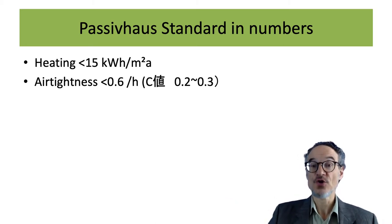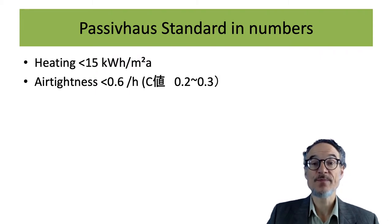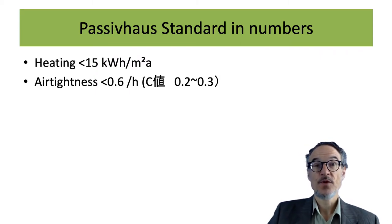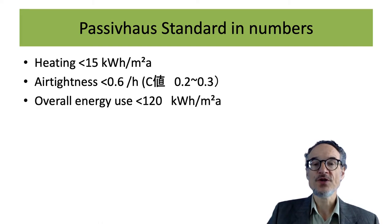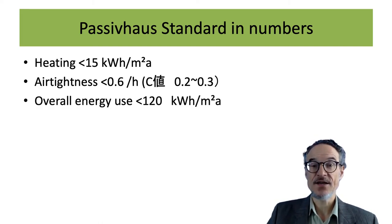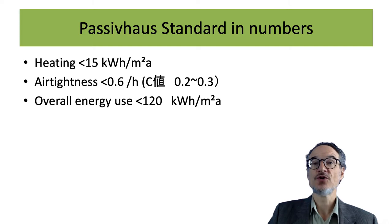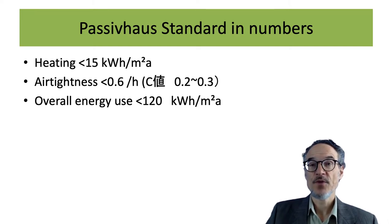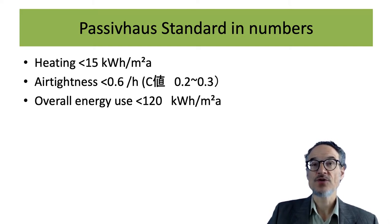When you're airtight, your ventilation works better. The overall total energy use — including heating, water heating, and everything — should be less than 120 kilowatt hours per square meter per year.